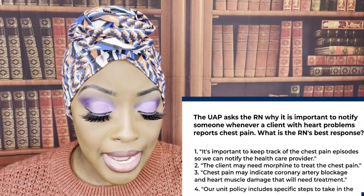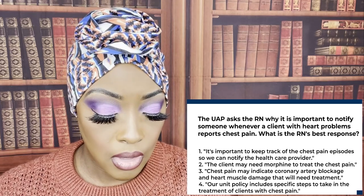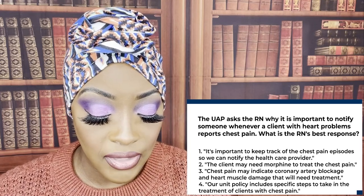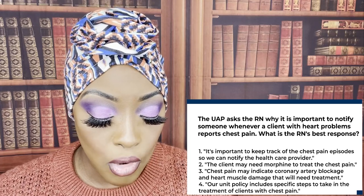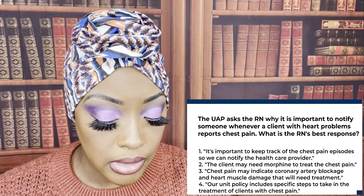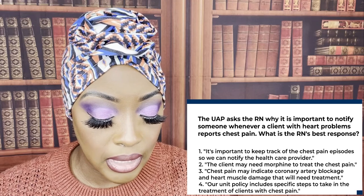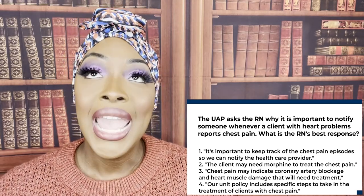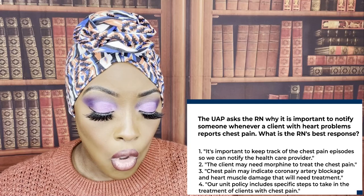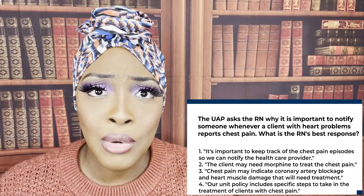The UAP asked the RN why it's important to notify someone whenever a client with heart problems reports chest pain. What is the RN's best response? One, it's important to keep track of chest pain episodes so we can notify the healthcare provider. Two, the client may need morphine to treat the chest pain. Three, chest pain may indicate coronary artery blockage and heart muscle damage that will need treatment. Four, our unit policy includes specific steps for the treatment of clients with chest pain. Even though all of these statements are true, the question is why — what is the priority?